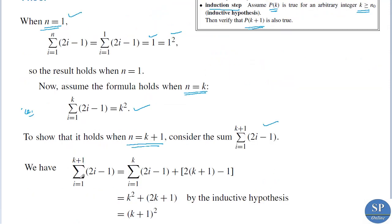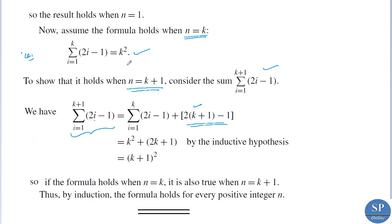Now, summation i from 1 to k+1 of (2i minus 1) is nothing but summation i from 1 to k of (2i minus 1) plus the (k+1)th term, which is 2(k+1) minus 1. We are splitting 1 to k+1 into 1 to k plus the (k+1)th term. We assumed summation i from 1 to k of (2i minus 1) is k squared. So this becomes k squared plus 2k plus 2 minus 1, that is k squared plus 2k plus 1, which is (k+1) squared.